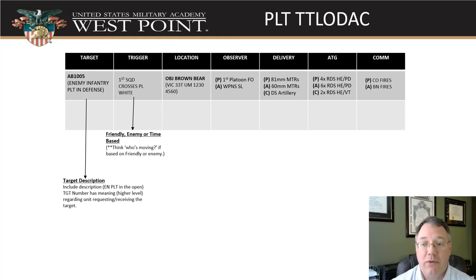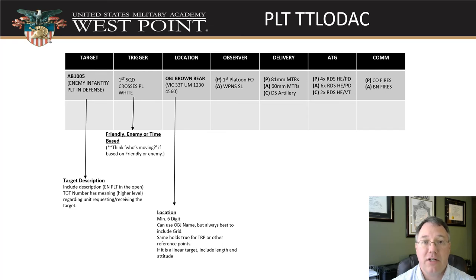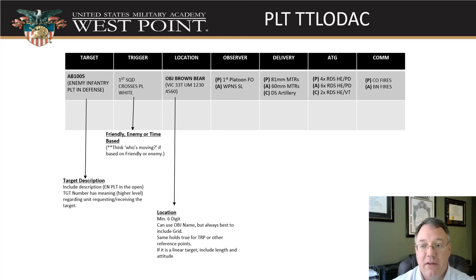These are planned targets — we have to know what we're doing. The trigger can be when you cross a phase line, or it can be conditional: for example, an event has occurred like 'we get ambushed near checkpoint three.' That tells you now is the time to fire that round. For location, make sure you're giving a minimum six-digit grid, although ideally eight or even ten. If you plan linear targets, you have to give both a compass azimuth to lay on and a length, along with the location of the center point.